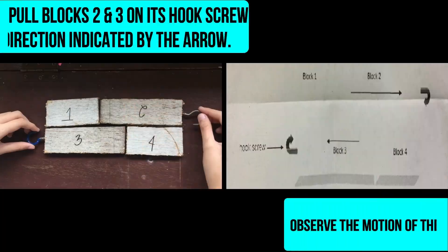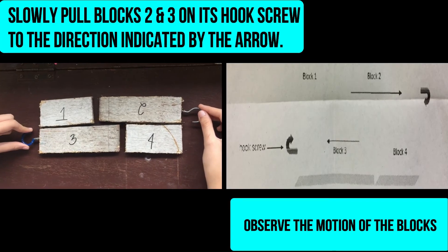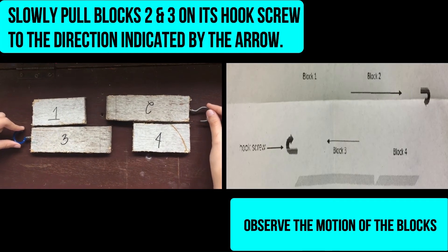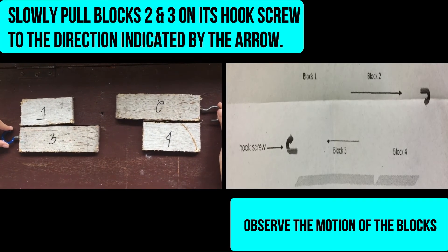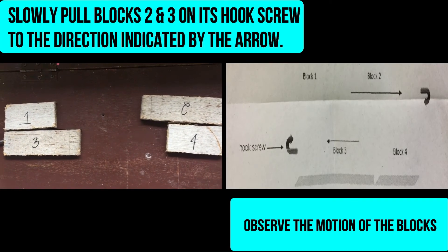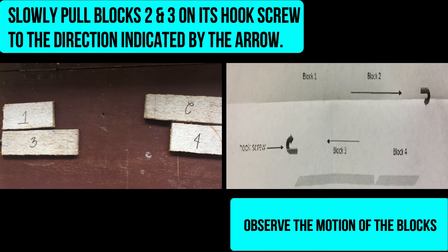Number 4: Slowly pull blocks 2 and 3 by their hook screws in the direction indicated by the arrow. Observe the motion of the blocks.